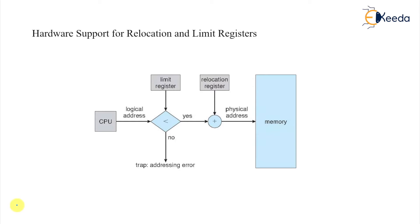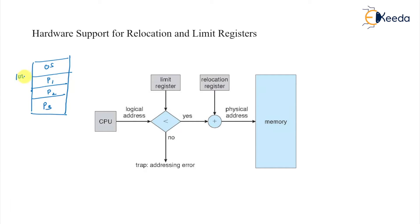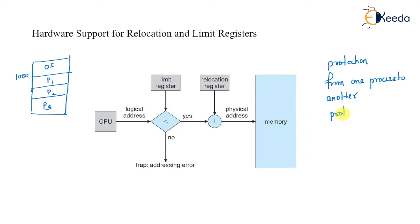If there are many different processes running — suppose the operating system, process P1, P2, P3, starting at address 1000 — then we require protection from one process to another. We also need to protect operating system routines. That protection is really required in this case.